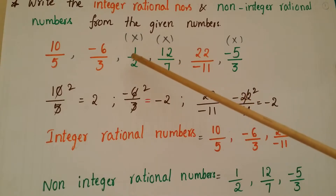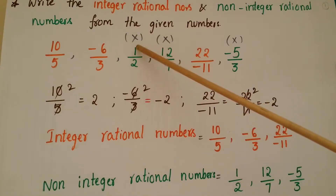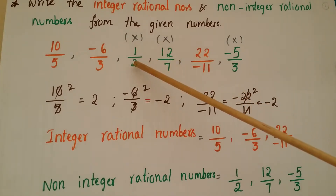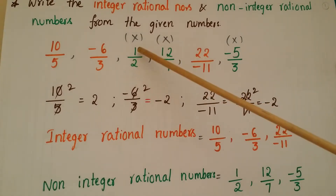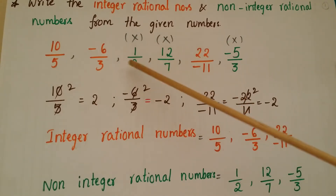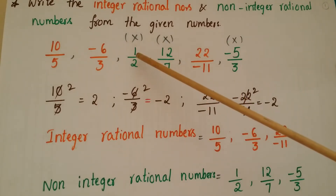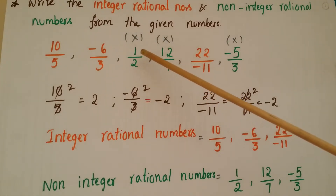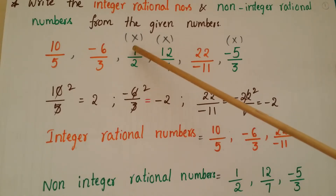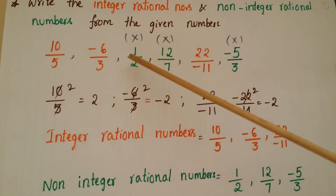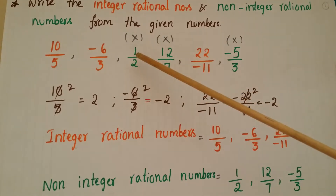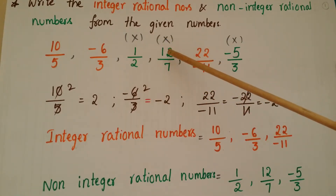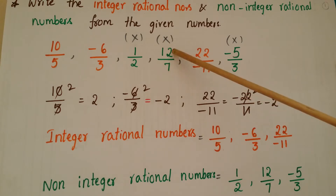If you take the third number 1 by 2, the numerator and denominator cannot be divided by a common number. So this is a fraction, or we can write it as a decimal. Fractions and decimals are not integers, so this is a non-integer rational number.